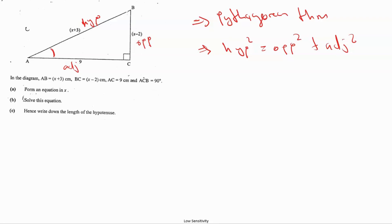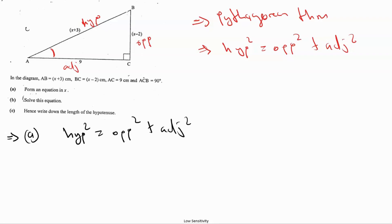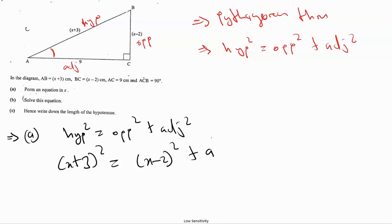So we can jump into using that formula to form an equation in X. The hypotenuse squared equals the opposite side squared plus the adjacent squared — that's the Pythagorean theorem. We have the hypotenuse here which is (X + 3), so (X + 3) squared equals (X − 2) squared plus 9 squared.